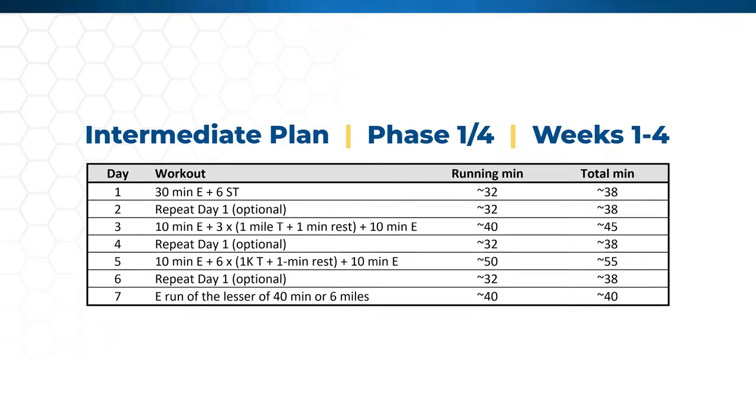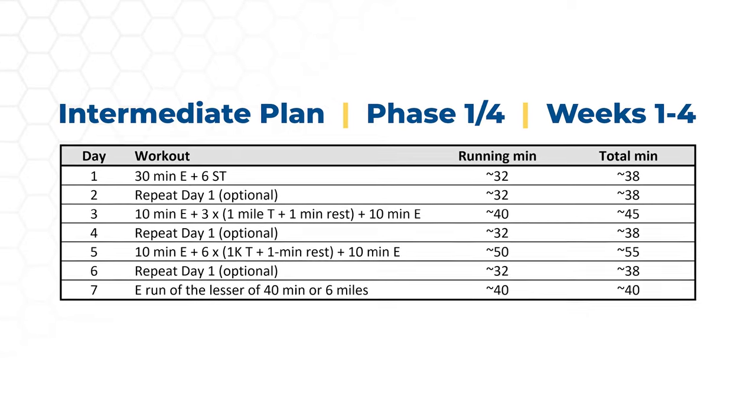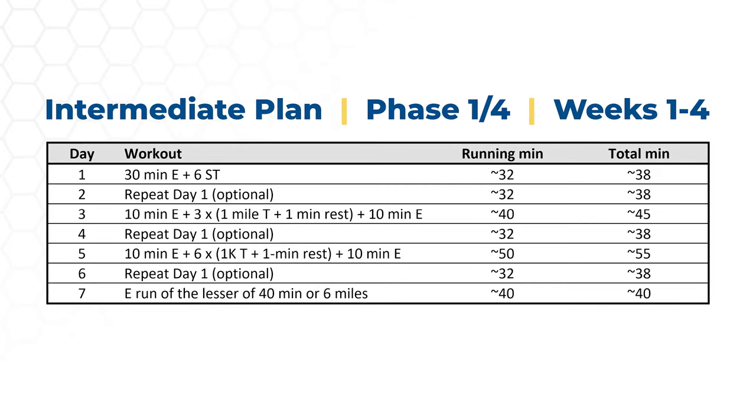Lastly, I picked one of Daniels' running plans to begin my work. Daniels offers 4 different running plans for beginners, intermediates, advanced, and elites. Each one of these 4 plans has 4 different phases — phases 1, 2, 3, and 4 — and each phase has 4 weeks of training. I decided to start off with the intermediate plan, phase 1. Here you can see my first 4 weeks of training in phase 1 of the intermediate plan, and I'm a couple weeks into it already and I'm loving it.